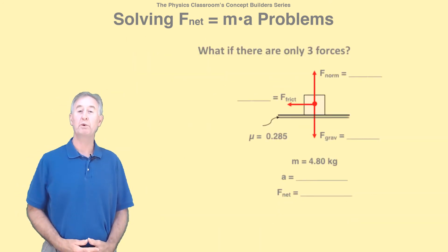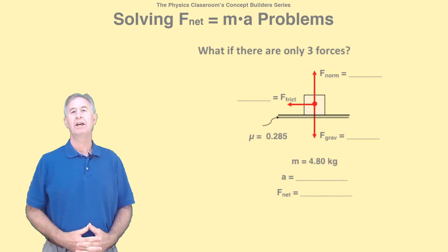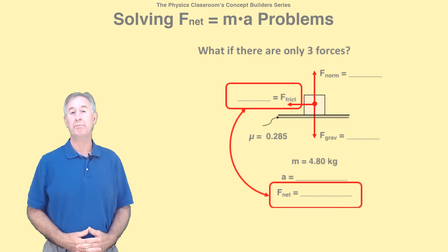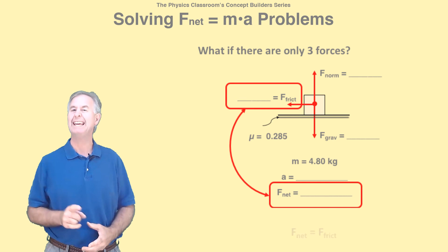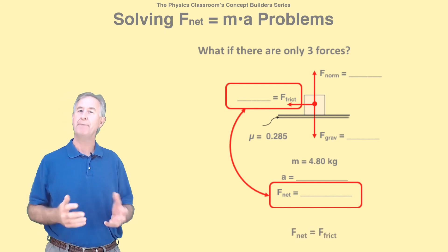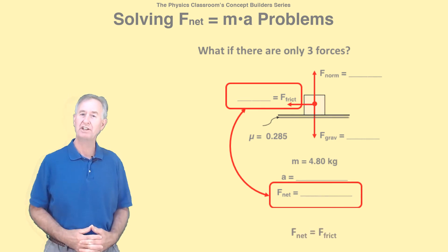Some students are stumped when there is only one horizontal force. No need to be. The horizontal force, whether it be f frict, f applied, or f tension, is an unbalanced force and equal to f net. The math is actually simpler in these cases.